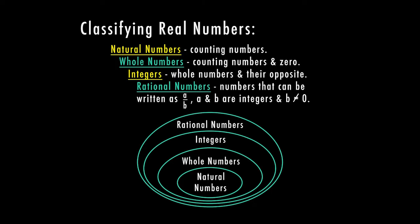That means that each level from the inside out are all considered rational numbers. But if they're only in the outer circle, they're only a rational number. We'll go over this in a little more depth.